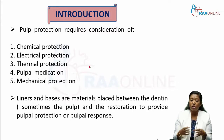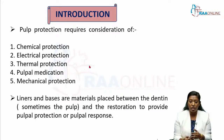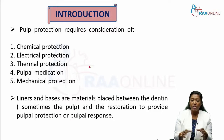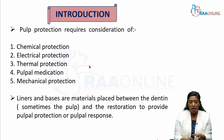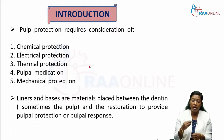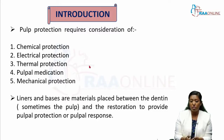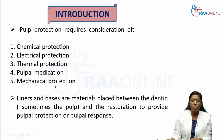Next is thermal protection — you have to protect the pulp from the passage of heat or cold. With a metallic restoration like amalgam, you must prevent the direct transfer of heat or cold stimulus to the underlying pulp. Next is pulpal medication: if there is a very deep cavity, you cannot directly place a permanent restoration, as it will result in pulpal death or pulpal necrosis. So you apply a medicament like calcium hydroxide to protect the pulp.